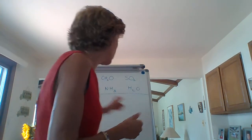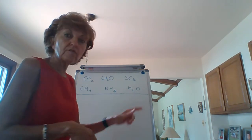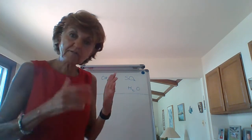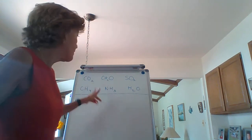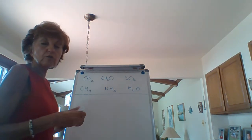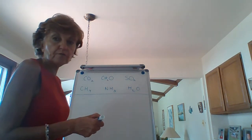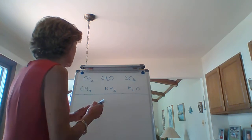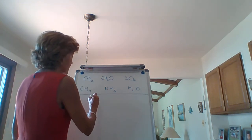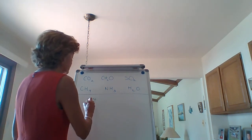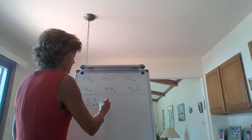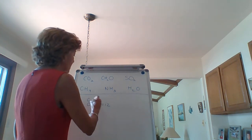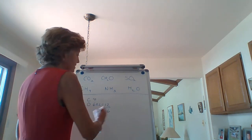I have six molecules on the board here and we're going to do all of that for all six molecules. First things first, we're going to do the Lewis structure for carbon dioxide, which is CO2. Carbon has four valence electrons. Oxygen has six and I have two of them, so that's 12. 12 plus four is 16.